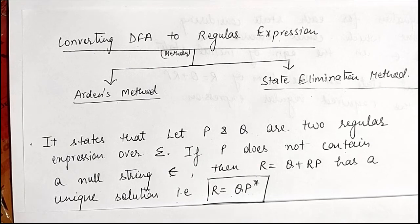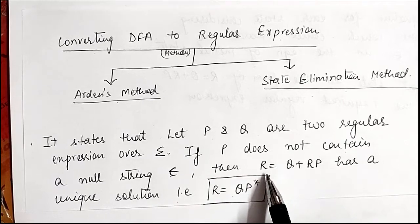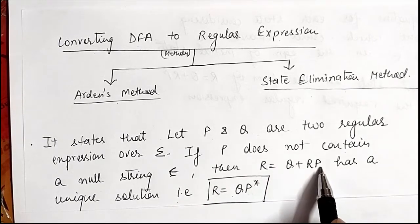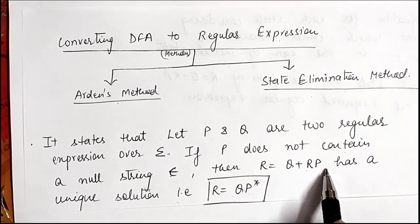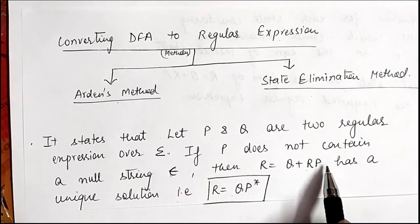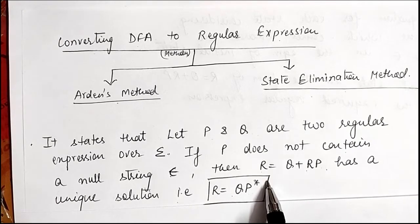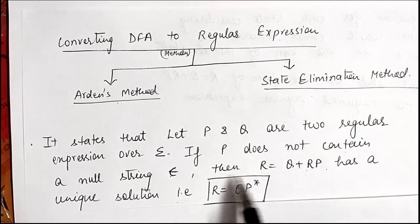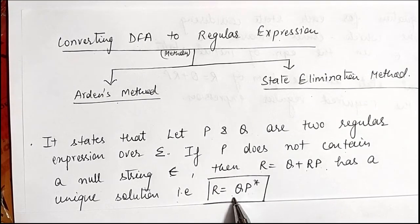Second, we have to bring the final state into the form r = q + rp, find out what r, q, and p are, and then find the unique solution r = qp*. With the help of this equation we find the regular expression for a particular DFA.